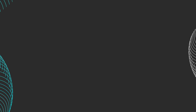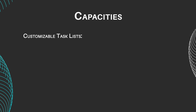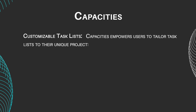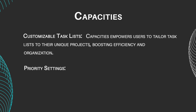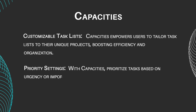Let's take a look at these note-taking programs' main features. Capacities includes customizable task lists, empowering users to tailor task lists to their unique projects, boosting efficiency and organization. With priority settings, Capacities lets you prioritize tasks based on urgency or importance, ensuring focused productivity.